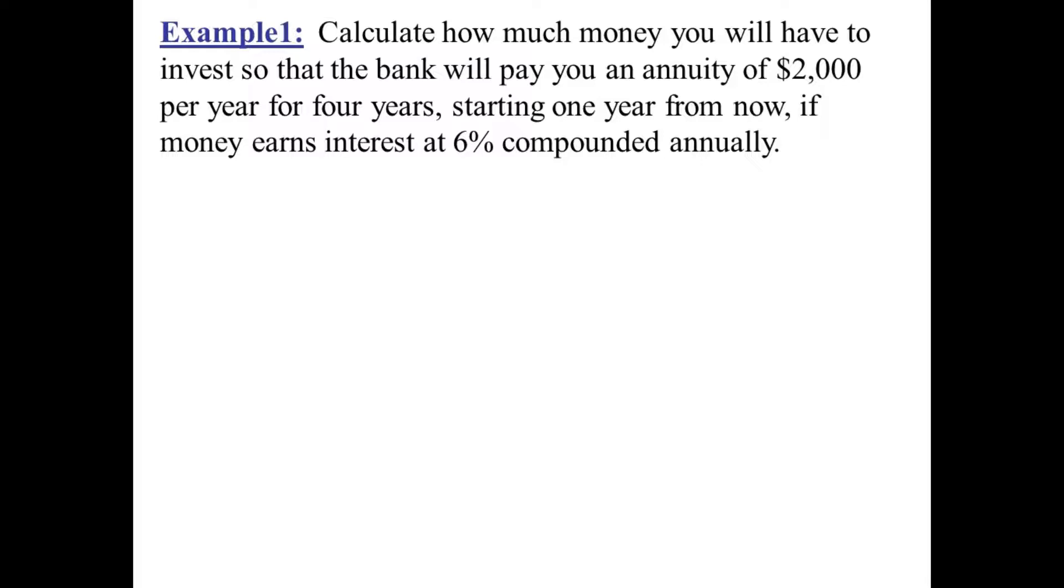Let's take an example. Calculate how much money you will have to invest so that the bank will pay you an annuity of $2,000 per year for four years starting one year from now, if money earns interest at 6% compounded annually. So we want to have the bank pay us $2,000 each year for four years. Well that would be a total of $8,000. So I wonder if we would have to invest more or less than $8,000. Let's calculate.